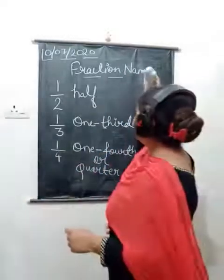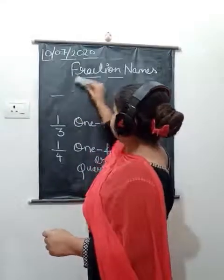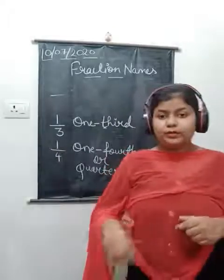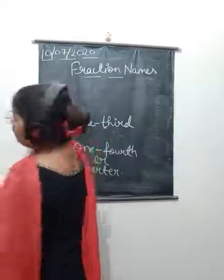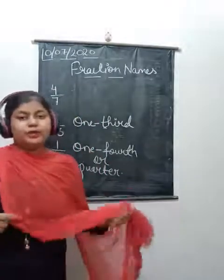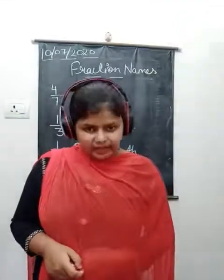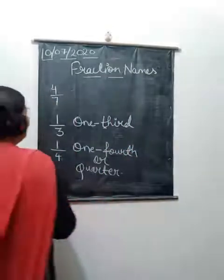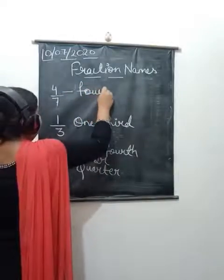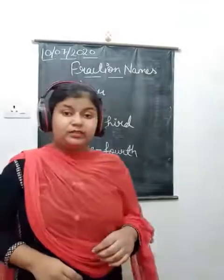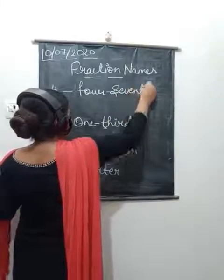Let us take some more examples. Our next example is four upon seven. So what will we call this? The numerator is 4, written as it is, and the denominator 7 becomes '7th'. So four upon seven will be called 'four seventh'.